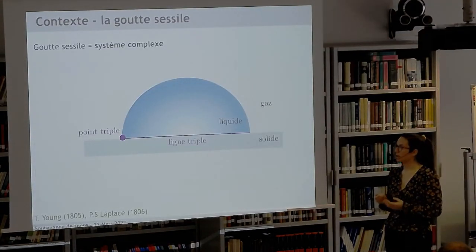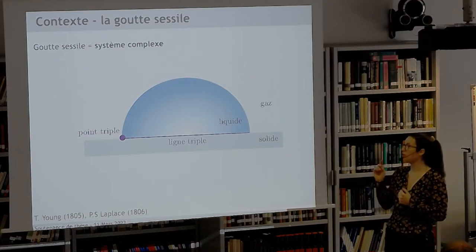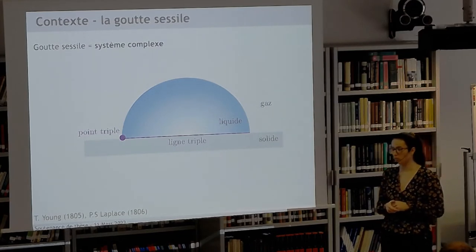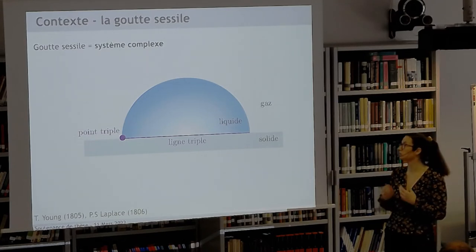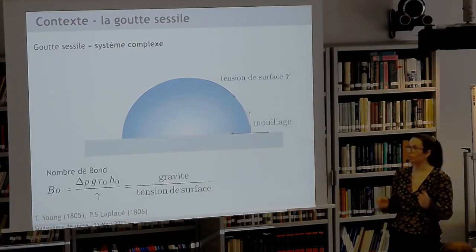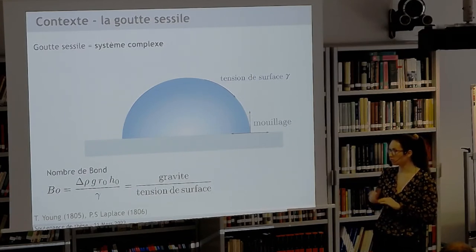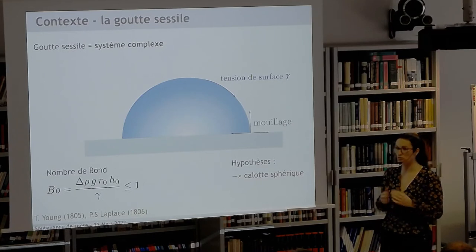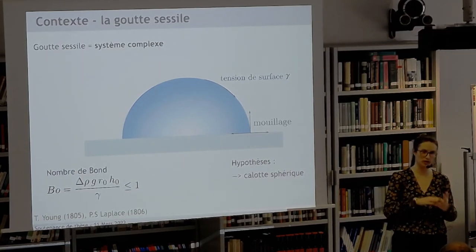La goutte sessile est un système assez complexe qui mêle les trois phases de la matière — solide, liquide et gaz — notamment au point triple et au niveau de la ligne de contact, qui est le périmètre de la goutte. Ce système a été beaucoup étudié par Thomas Young et Pierre-Simon Laplace pour l'étalement des liquides sur les matériaux. La forme que la goutte adopte résulte d'une compétition entre forces de gravité et de tension de surface, caractérisée par le nombre de Bond. Si ce nombre est inférieur à 1, la tension de surface domine et la goutte prend la forme d'une calotte sphérique.